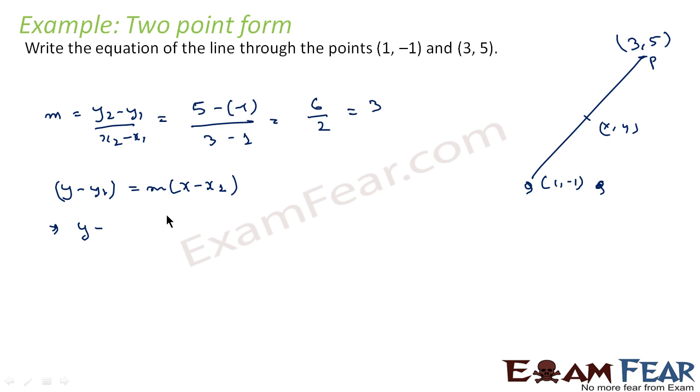So this becomes y plus 1 equals 3 times (x minus 1), or y plus 1 equals 3x minus 3, or we get 3x minus y minus 4 equals 0. This is the equation of the line.